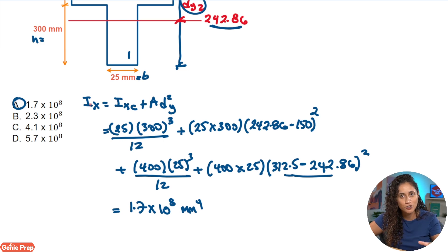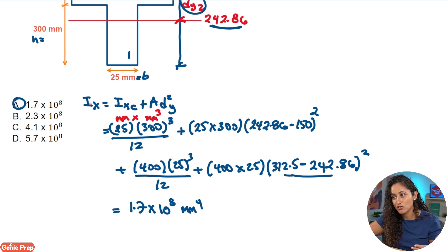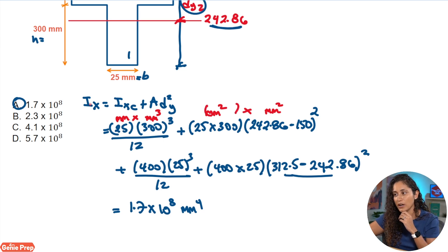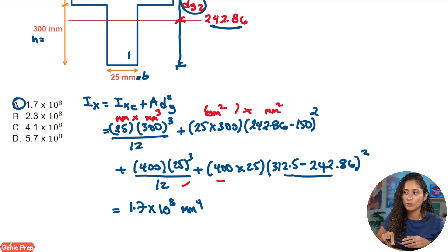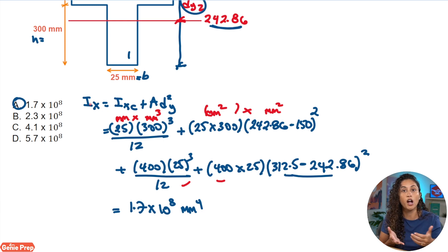Let's verify the units. For the first term bh³/12: millimeters times millimeters cubed gives millimeters to the fourth. For the second term, the area is millimeters squared, and dy squared is also millimeters squared, giving millimeters to the fourth. The same applies to both terms for shape two. So everything comes out to millimeters to the power of four. It's very important to check your units — you can catch mistakes that way, and it will really help with your FE preparation.